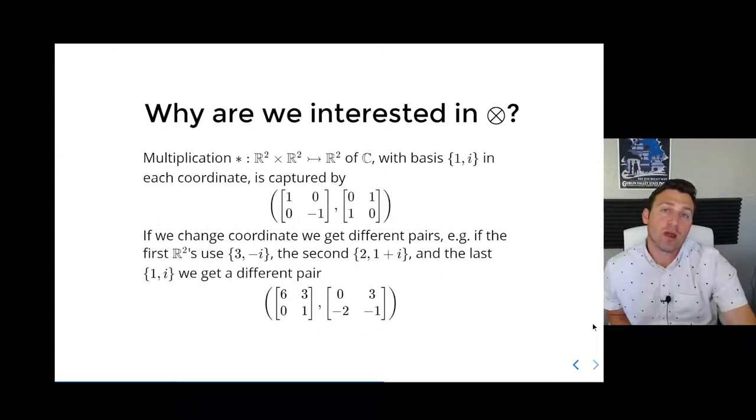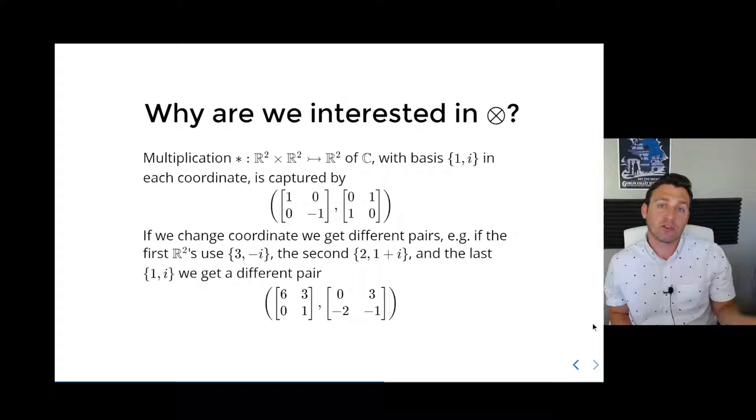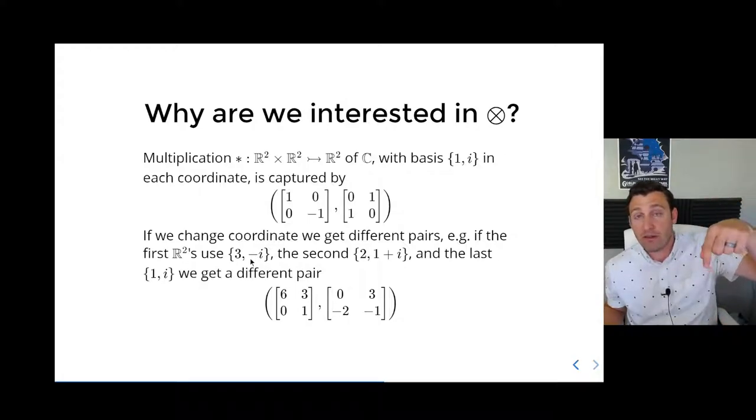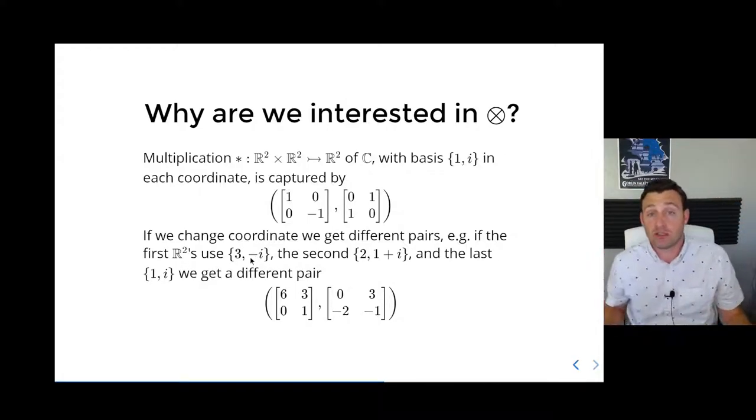Describing the product over the reals in the fixed basis {1, i} could be done by just describing these two matrices. But this pair turns out to have been an artifact of choosing 1 and i. We could have used a different basis for the complex numbers. Because our situation involves three vector spaces, we could choose our bases completely independently and describe this product in a much more unhelpful way. The first one might be {3, -i}. So does {2, 1+i}.